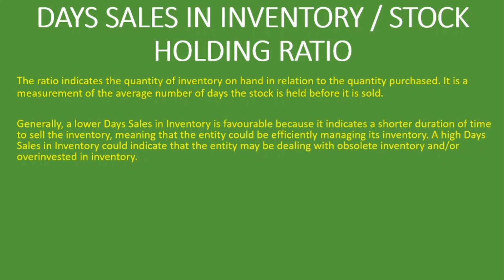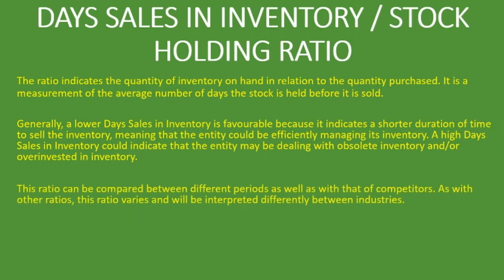Generally, a low day sales in inventory is favorable because it indicates a shorter duration of time to sell inventory, meaning the entity could be efficiently managing its inventory. The lower the ratio, the better it is for the company. A high day sales in inventory could indicate that the entity may be dealing with obsolete inventory or has over-invested in inventory, meaning it's taking longer for them to sell.